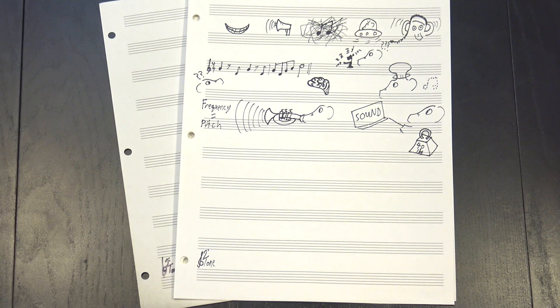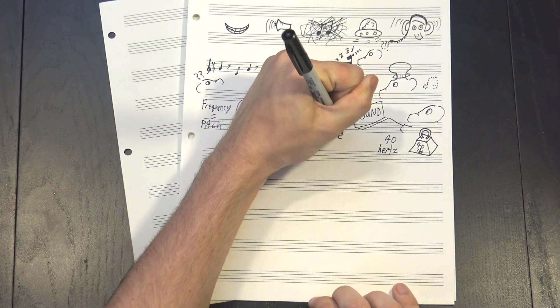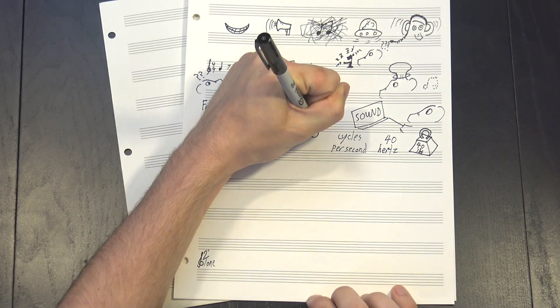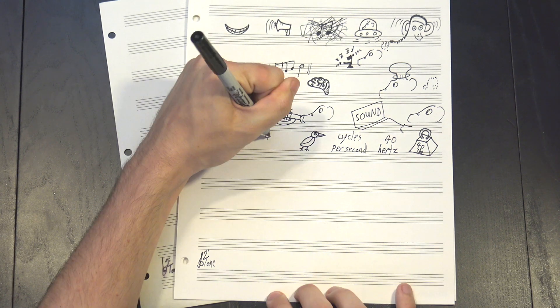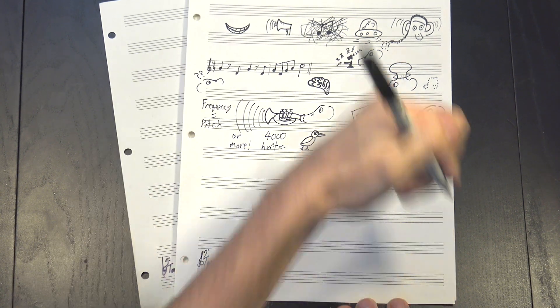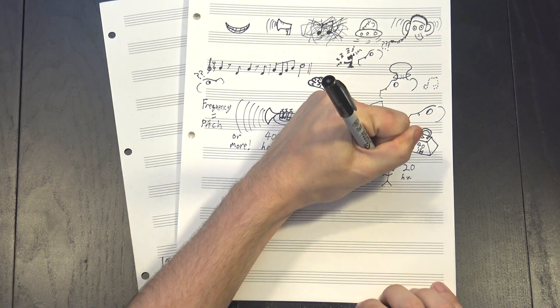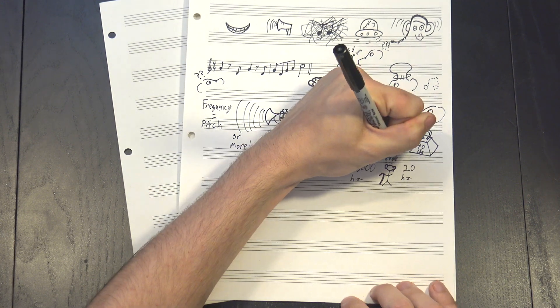A low sound might be only 40 Hz, meaning it hits your ear 40 times per second, whereas a higher one might be 4000 or even more. Human hearing stretches from around 20 Hz to 20,000, although that depends on how old you are and how good your hearing is.